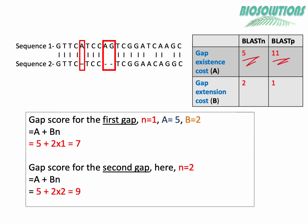In our example there are two independent gap events, one with an N value of 1 and another with N value of 2. Since our sequences are nucleotide and BLASTn is being used, we will use value of A as 5 and value of B as 2. Now let's calculate the gap score for our example. It's 7 for the single gap and 9 for the 2 base gap.